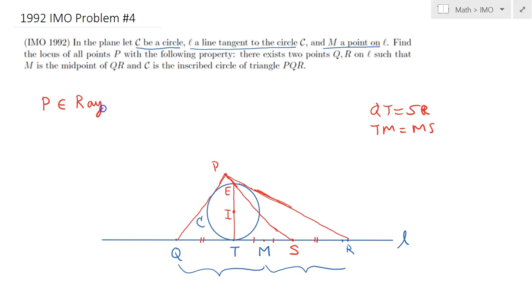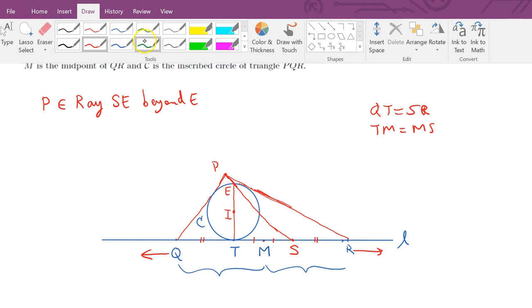The reason is that as I take Q to the left and R to the right, the most that I can go is at infinity. If I take both Q and R into infinity, M will still be the midpoint, and as a result the tangencies QP and RP will be such that P will contain all the points except the point E, all the points on the ray SE except the point E.